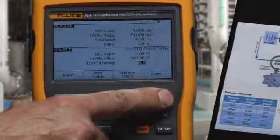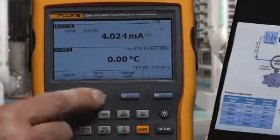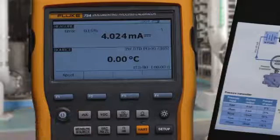We're going to test three points. Select auto test, and the performance of the transmitter will be recorded.